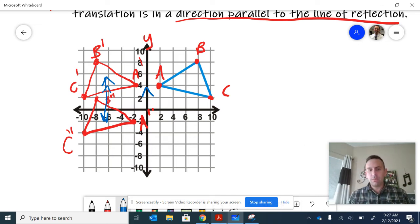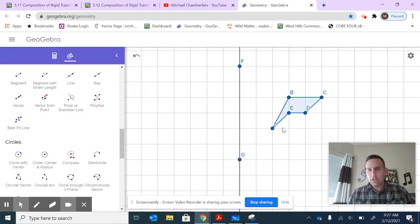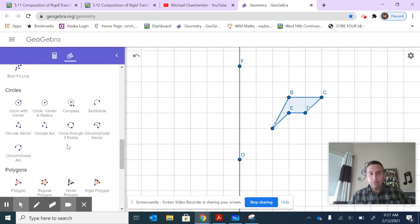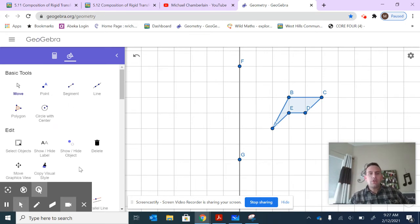If I were to reflect across the x-axis, then I would need to move in this direction—that's what it means by parallel. Let's take a look at this in GeoGebra. Here we have a figure and a line so you can reflect about that line and move it up or down as a glide reflection, or you can do that across the line that's perfectly horizontal.